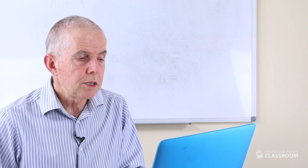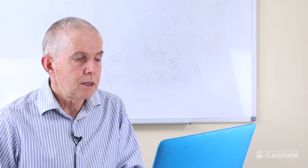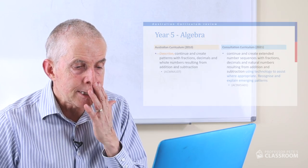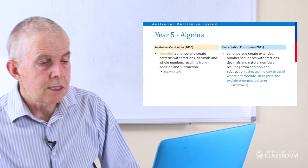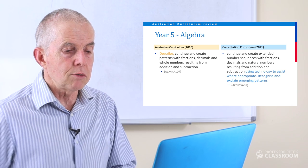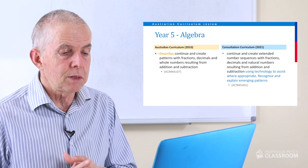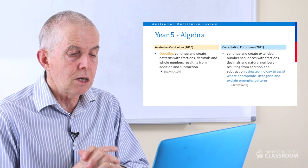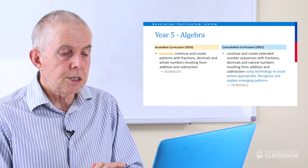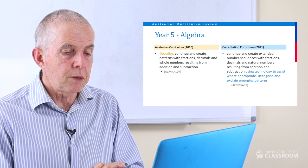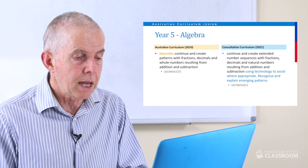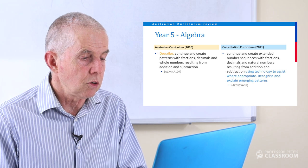Let's move on to algebra — Year 5 algebra, number one. Continue and create extended number sequences with fractions, decimals and natural numbers resulting from addition and subtraction — that's all the same. Using technology to assist where appropriate. Recognise and explain emerging patterns. Very good, there's really not much to say.